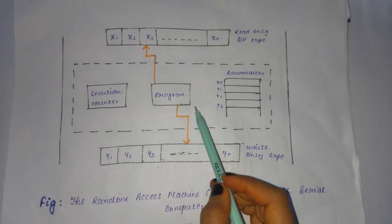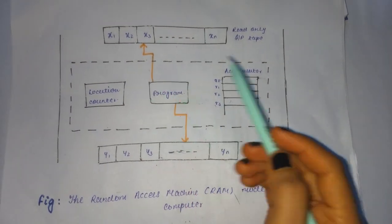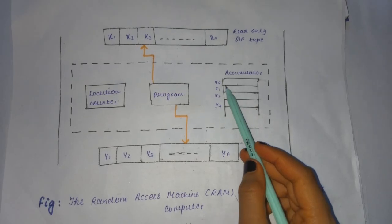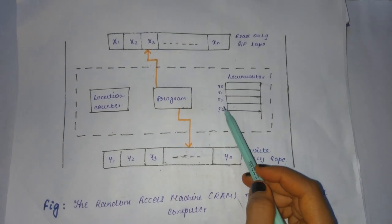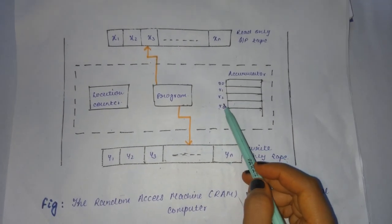And the memory, this is the memory, it consists of an unbounded sequence of registers, that is R0, R1, R2, R3, these all denote the registers.